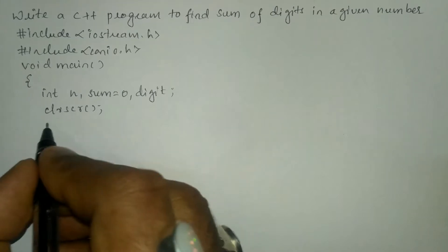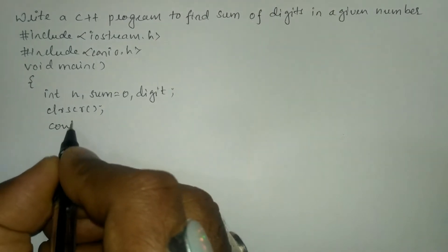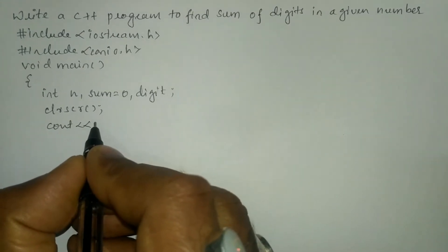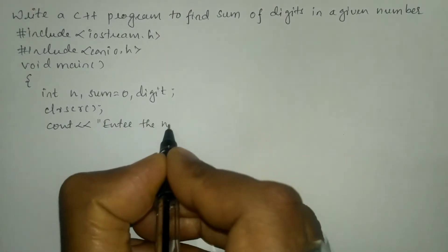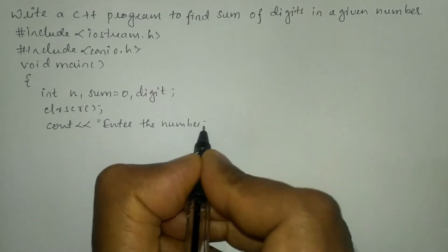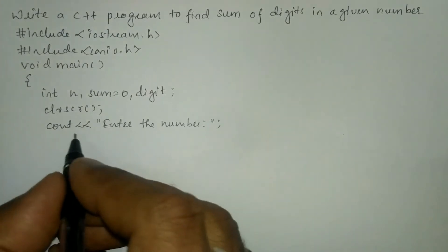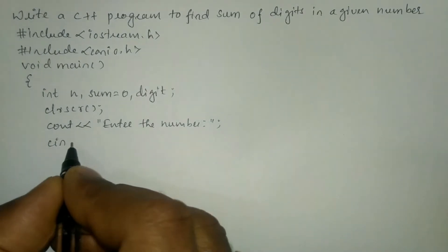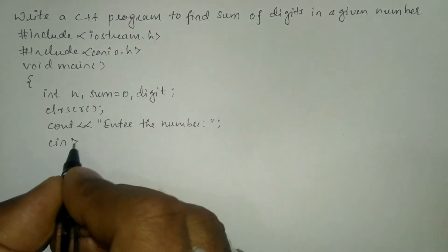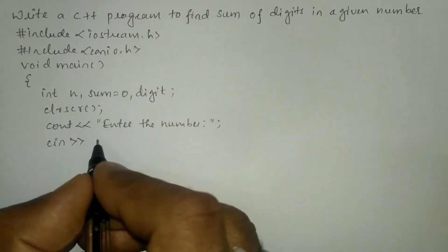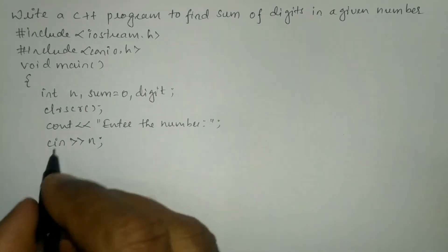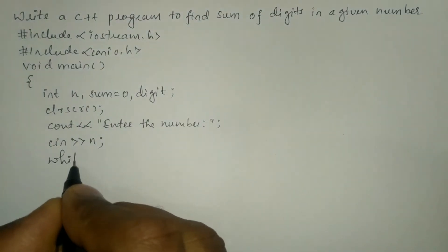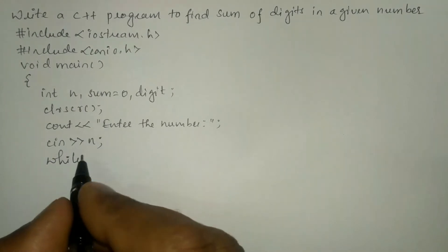Now we will ask the user to enter the number using cout with the stream insertion operator: in double quotation marks I'm going to write 'Enter the number' and put a semicolon. Now we are going to receive the response from the user through the keyboard using cin with the stream extraction operator into the variable n, and then put a semicolon. Now we are going to use the while looping construct.